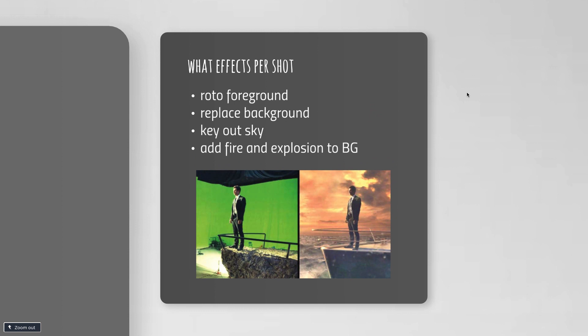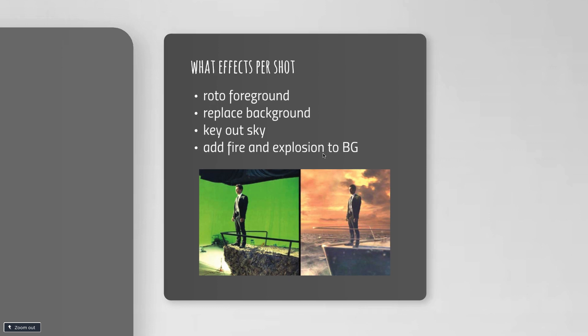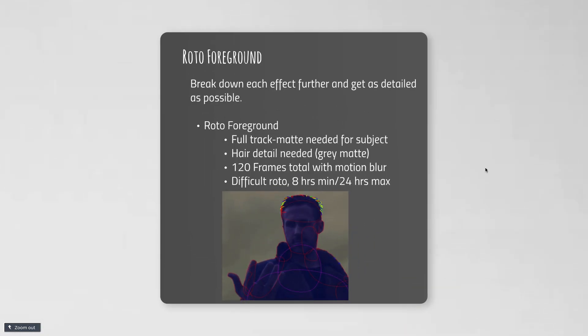I need to rotoscope the foreground, or maybe use a green screen technique, or a combination of both. Say I wanna replace the background, maybe key out the sky and do a full sky replacement, and add some fire or explosions in the background. Each one of those effects needs to be tackled separately and further broken down.